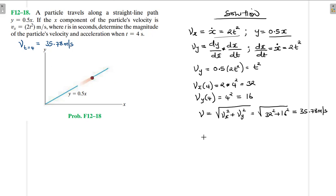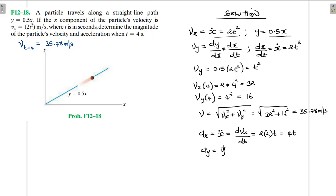Then for the acceleration, the acceleration in the x direction is x-double-dot, which is the derivative of 2t², giving us 4t. And then the acceleration in the y direction is y-double-dot, which is d/dt of v_y = d/dt of t², and this is going to be equal to 2t.